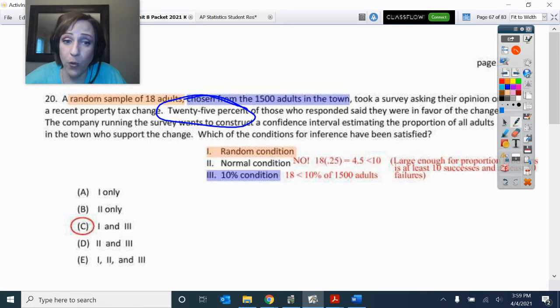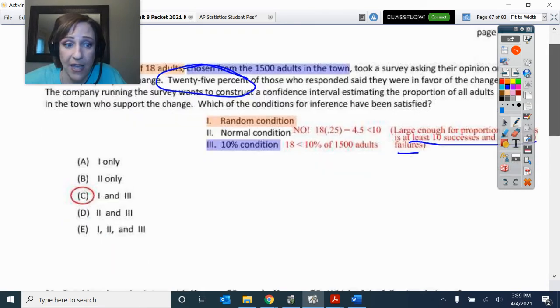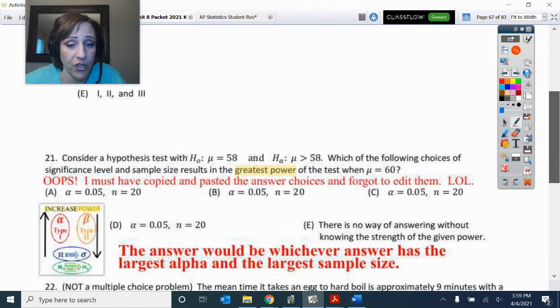And for proportions, the large enough, that's what that normal condition is. The large enough is that we have to have at least 10 successes and at least 10 failures. And so that's a no go. So one and three are good.